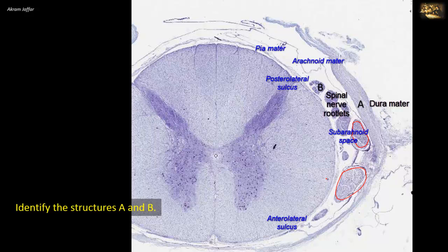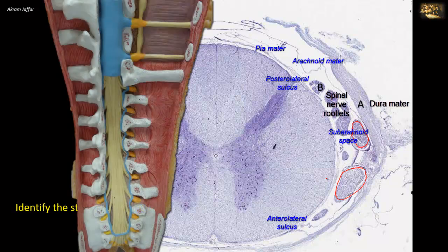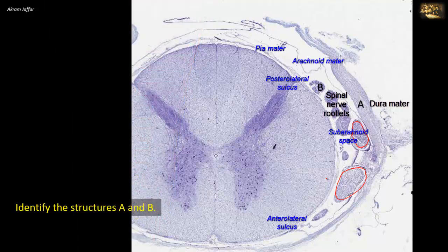A slight difference in growth rate continues during childhood such that the adult cord ends opposite the disc between the first and second lumbar vertebrae. So these nerve rootlets, when they have to descend from the nerve roots, arise from the vertebral canal opposite their original intervertebral foramen. For example, a sacral segment of the spinal cord has sacral nerves attached to it. The sacral segment is located at the level of the first lumbar vertebra, but the rootlets have to descend until they reach the sacral foramen to leave the vertebral canal. They thus have an oblique course, with increasing obliquity distally. That is why even in this thoracic segment, sections of some nerves are cut obliquely.